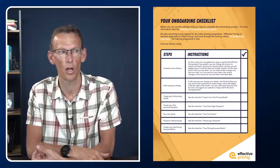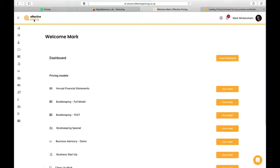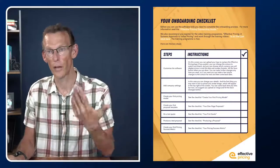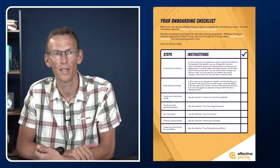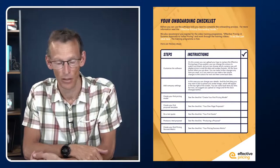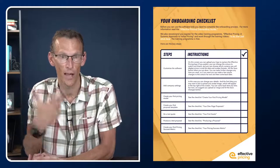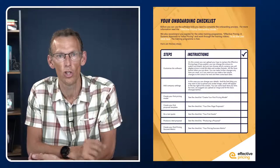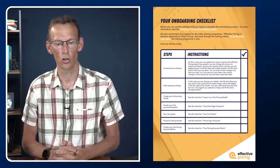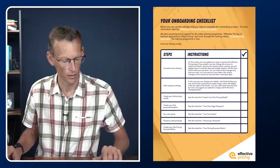The second thing in onboarding is to make changes to company settings — that might be adding an extra user, or adding your avatar image in the top right. If you've got other team members using it, they can have their image there too. Then you'll create your first pricing model. You can price any service — it doesn't have to be accounting. You could price legal services, website setup — but of course we focus on accounting.